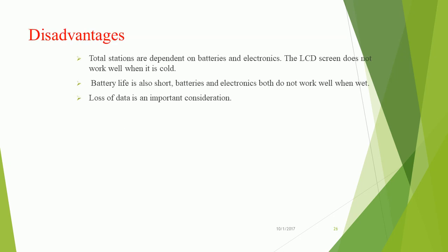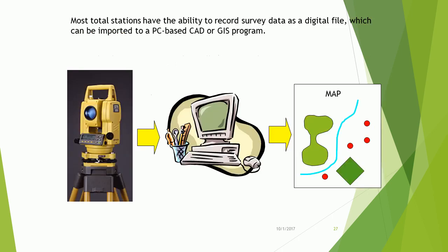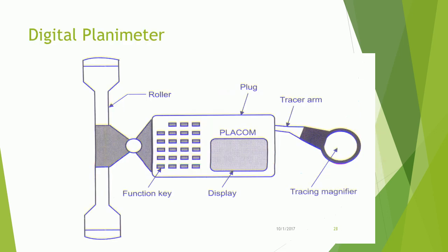Disadvantages: Total stations are dependent on batteries and electronics. The LCD screen does not work well in cold conditions. Battery life is also short. Batteries and electronics do not work well when wet. Loss of data is an important consideration. Most total stations have the ability to record survey data as a digital file, which can be imported to a PC-based CAD or GIS program.